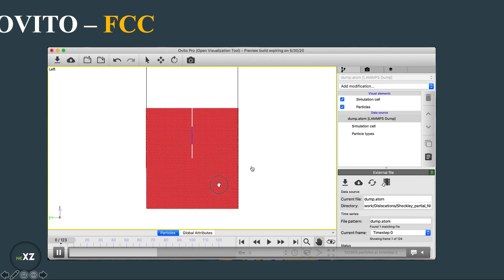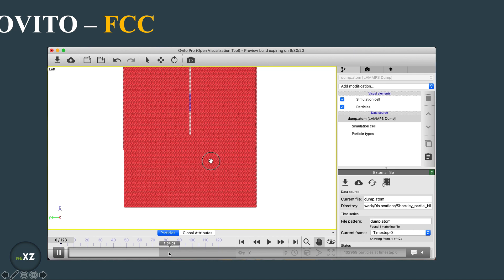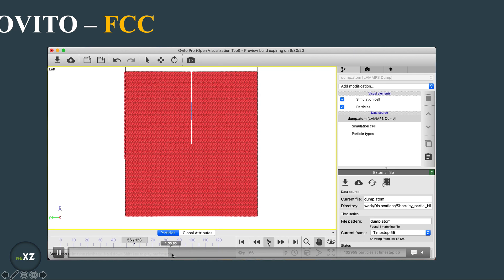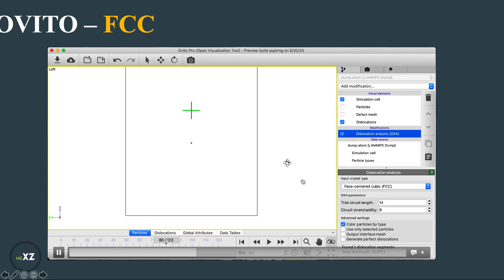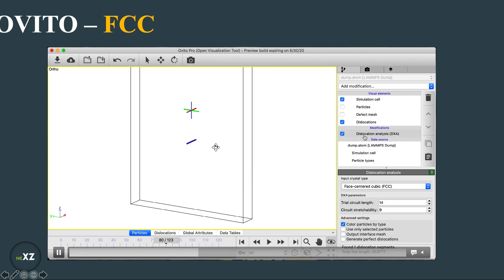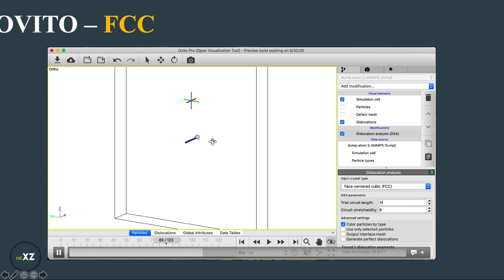Now what I do is if I play this video, you can see that the atoms are coming closer and the dislocation is being created here. So to make a video of this I give the DXA analysis and I remove the particles and you can see the dislocation is formed here.